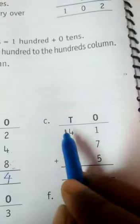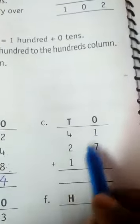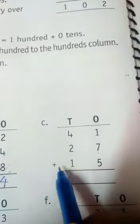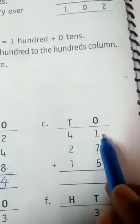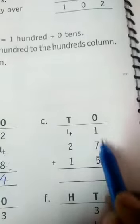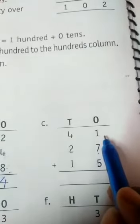Moving on to the third question. It is 41 plus 27 plus 15. In one space 1, 7 and 5. Here I am going to add this number.